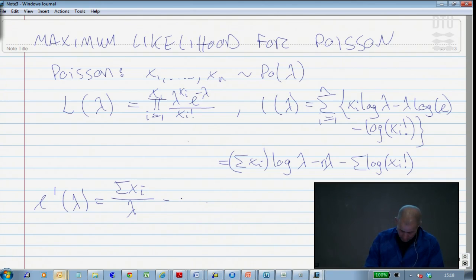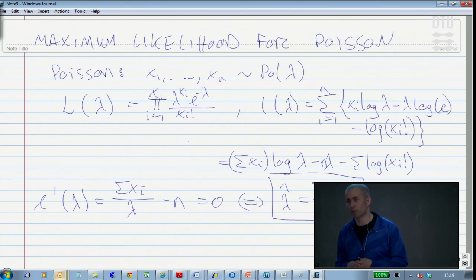If I equate the derivative with 0, I get the simple expressed solution here that the way we should estimate lambda according to the maximum likelihood principle would be, as we in a way would have done and do on a regular basis, as the actual average of the observed Poisson numbers. That is also the maximum likelihood estimate in the Poisson.